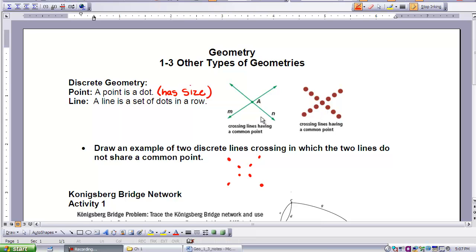If you look at the green lines, these are lines in synthetic geometry and this also has a point in common. But in synthetic geometry, whenever two lines intersect, they will always intersect at one point. But in discrete geometry, that's not always the case.